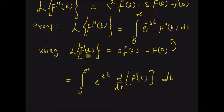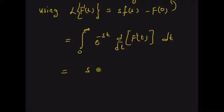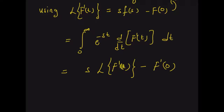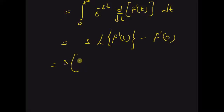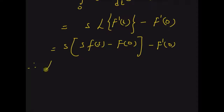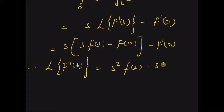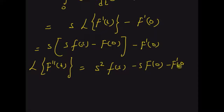Now, by using the Laplace transform of the first derivative, we can write this result as s times the Laplace transform of f'(t), minus the initial value f'(0). By again using the formula for the first derivative, that is the Laplace transform of the first derivative, we have s times [s·F(s) minus f(0)] minus f'(0). Therefore, the Laplace transform of the second derivative is equal to s²·F(s) minus s times f(0) minus the initial value of the first derivative f'(0).